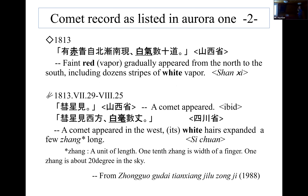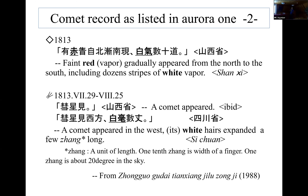The second example is from 1830. Unfortunately, this aurora record doesn't have a specific date — only the year. The record says: 'Red vapor gradually appeared from the north to the south, including dozens of stripes of white vapor.' On the same year 1830, from July to August, a comet appeared: 'A comet appeared in the west, white hairs expanding a few degrees.'